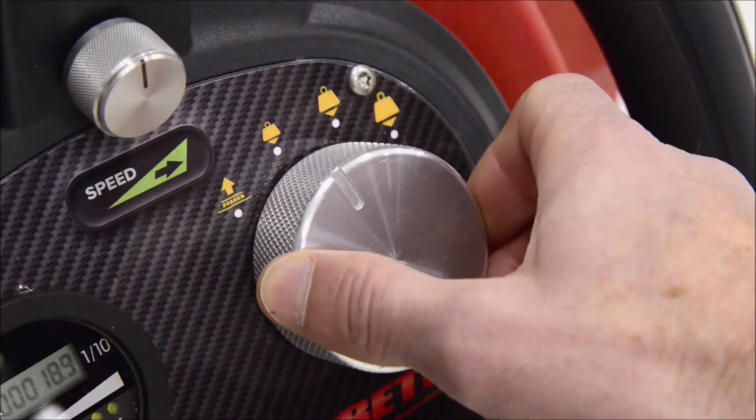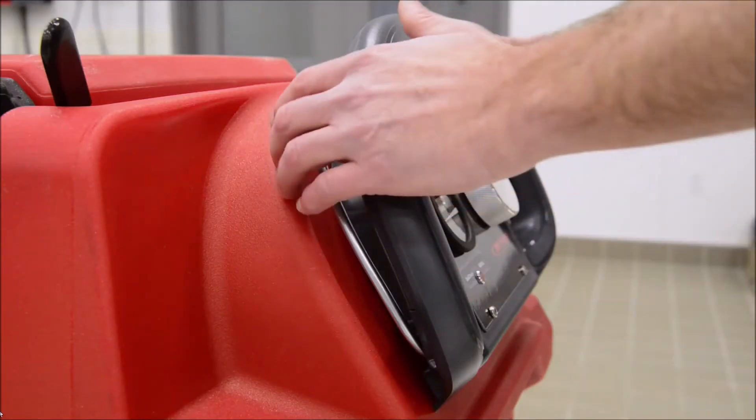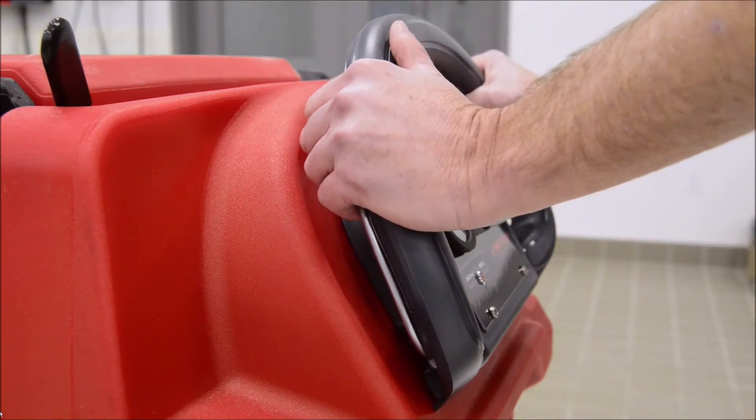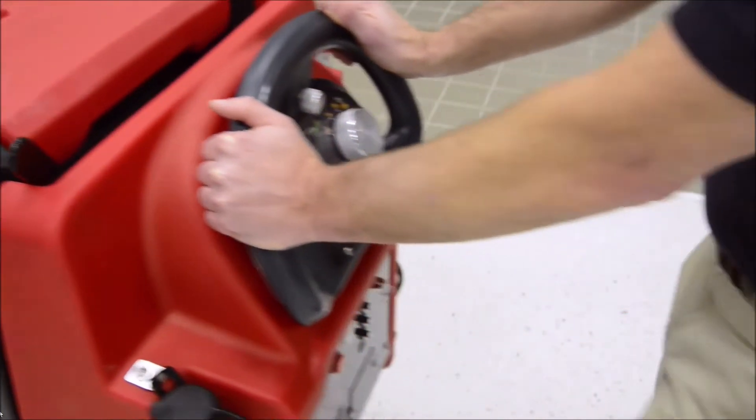Once you've made your setting selections, first lower the squeegee and activate the vacuum, then squeeze the bail activation trigger. This will activate the machine in the settings you selected for your application and the machine will propel forward.